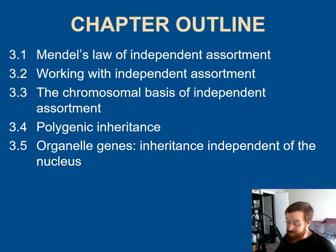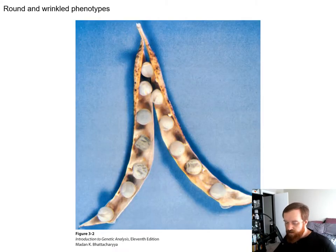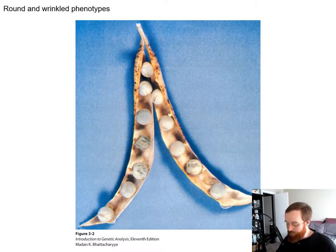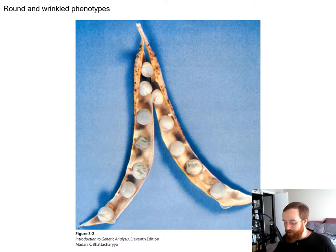Here's the chapter outline for your reference when you go back and study. Continuing on with our favorite example for these Punnett squares, we're going to keep using Mendel and his pea plants.